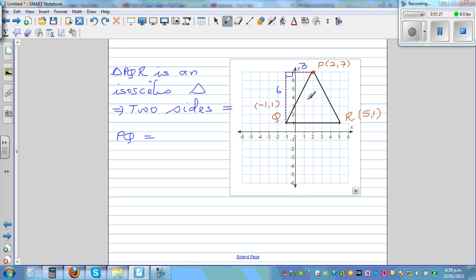So using Pythagoras, PQ is square root of 6 squared plus 3 squared, which is square root of 36 plus 9, which is square root of 45.